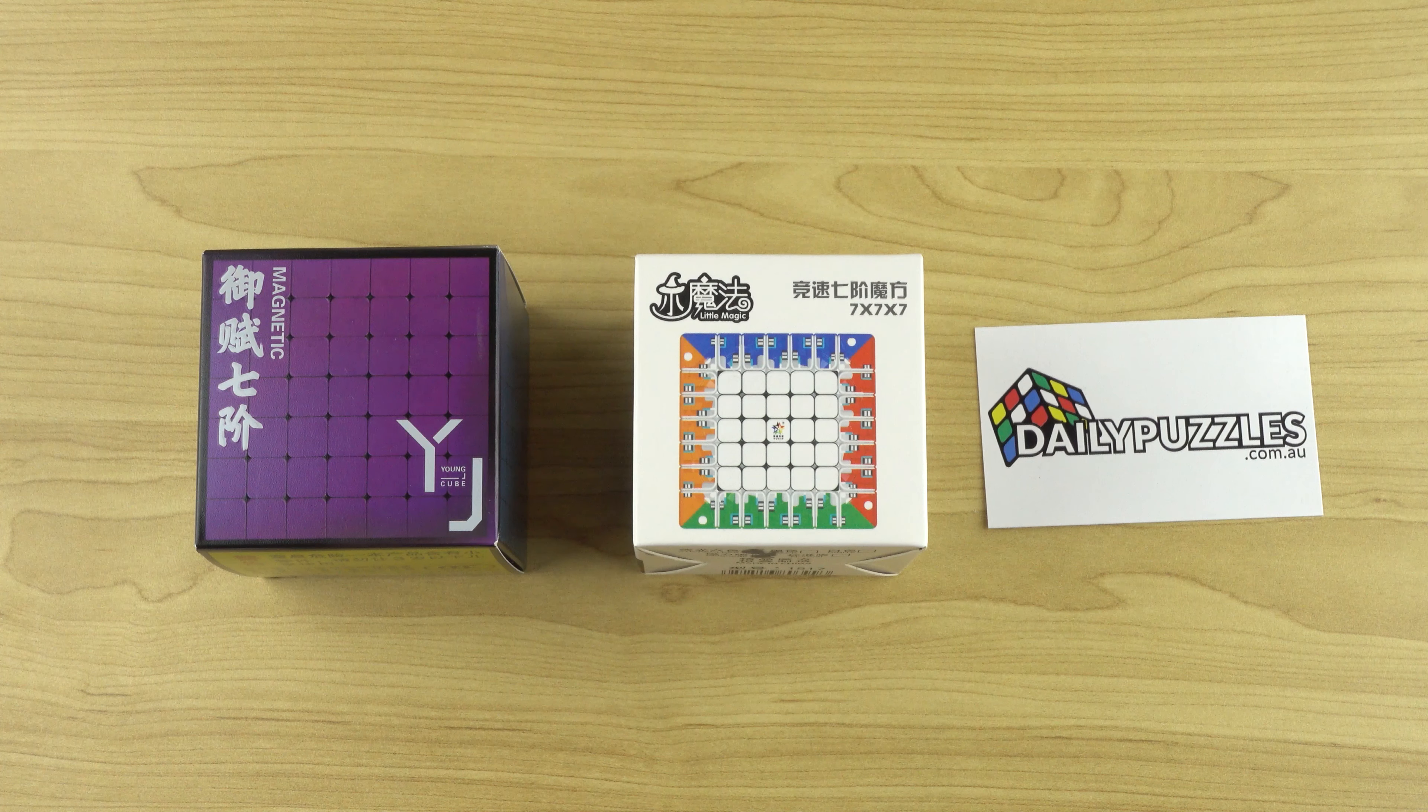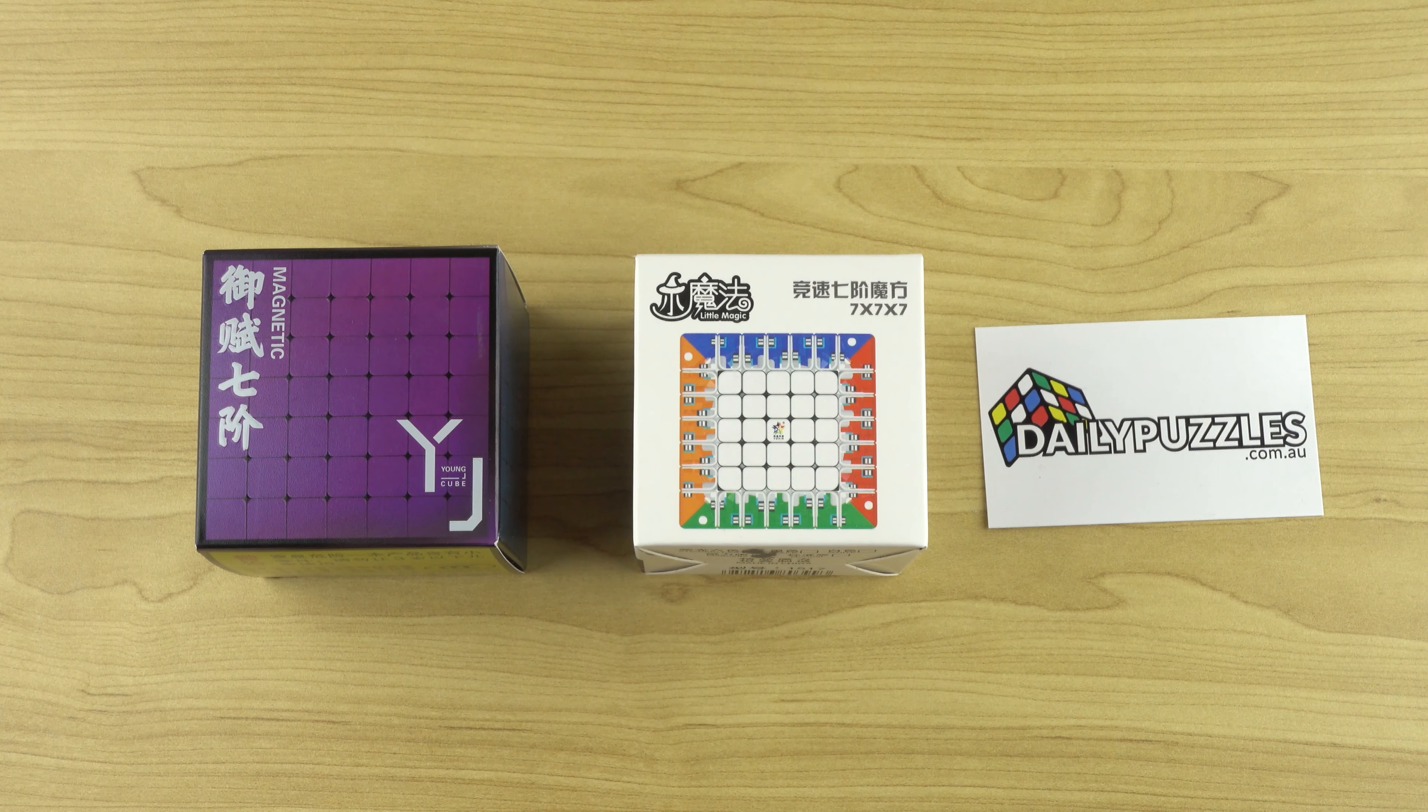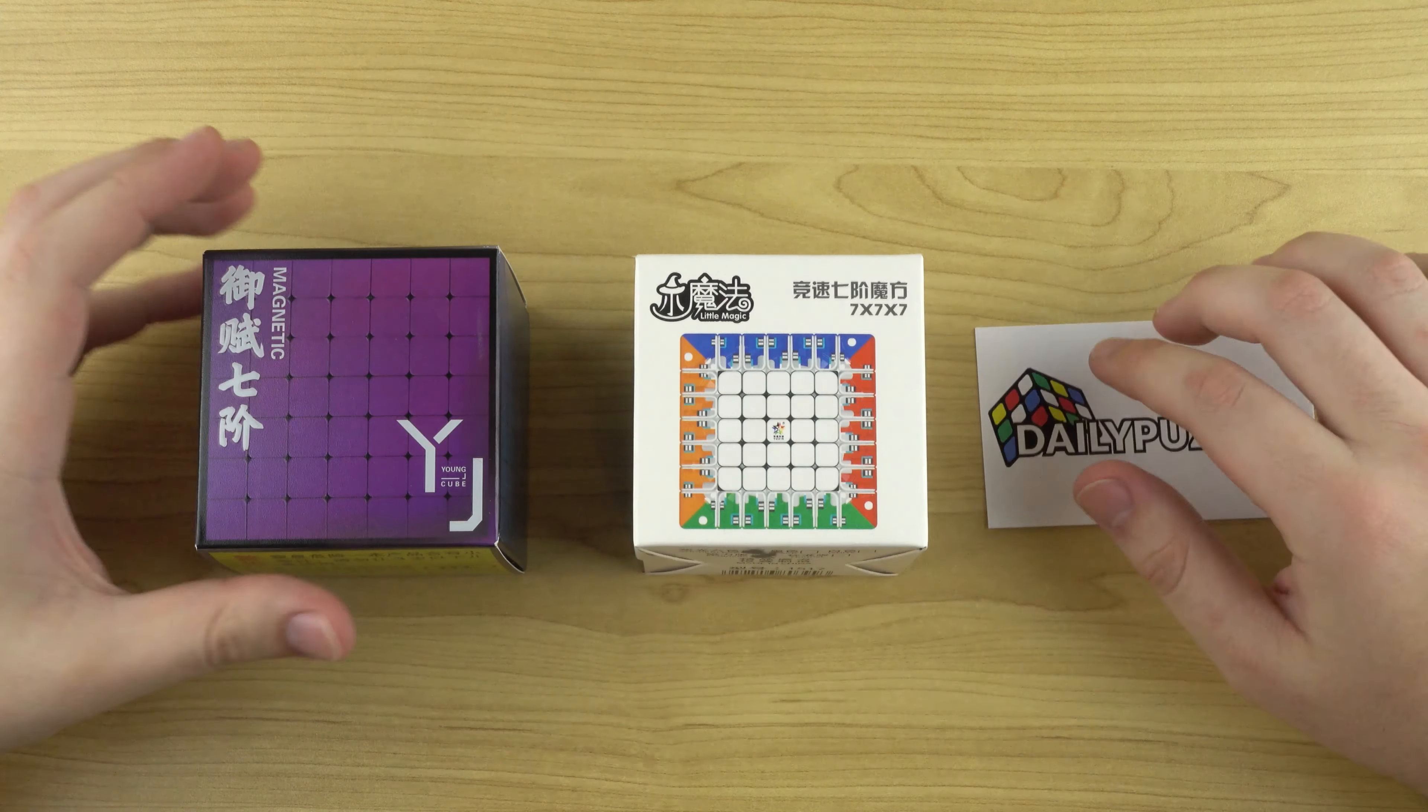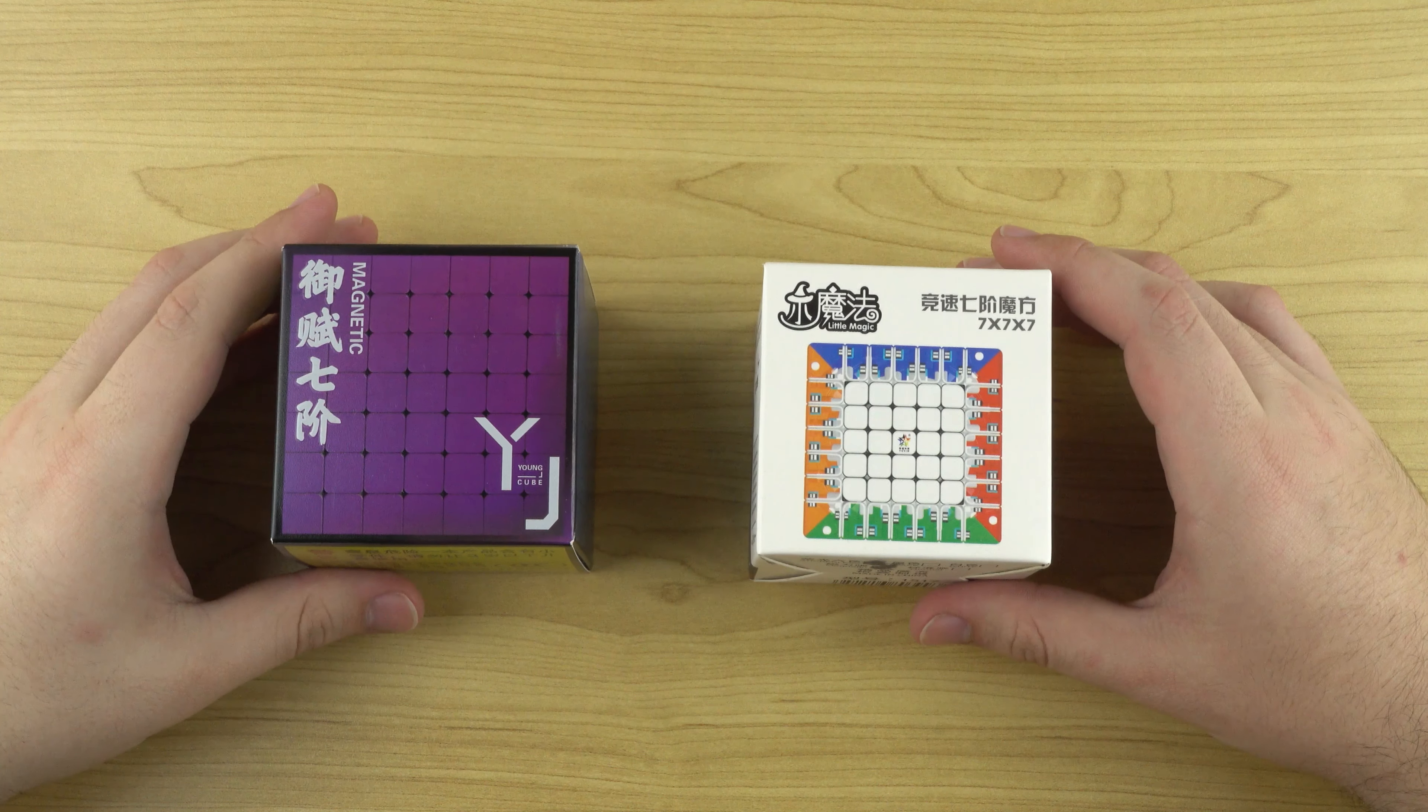Hello everyone, my name is Billy from dailypuzzles.com.au. Today we're going to be taking a look at two new budget 7x7s which were released last month. We have the YJ Yufu M on the left and on the right we have the Yushin Little Magic.